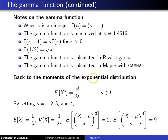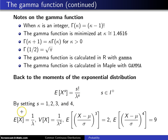When we return to the moments of the exponential distribution, if you look at the result for the expected value of x to the s — for any s value greater than negative 1 — if you put in a positive integer, this turns out to be s factorial divided by lambda to the s. For example, if you plug in s equals 1, you get 1 over lambda for the expected value of x. Likewise, the expected value of x squared is 2 factorial divided by lambda squared, which can be used to calculate the variance of x by the shortcut formula, giving 1 over lambda squared. The skewness is equal to 2 and the kurtosis is equal to 9.